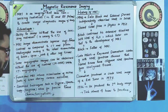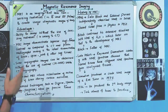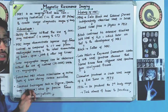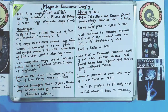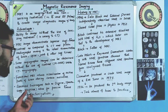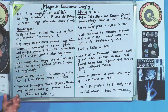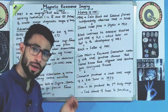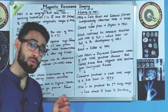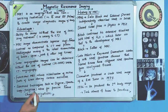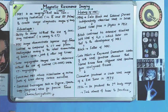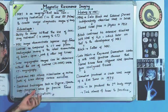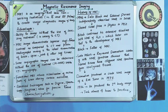Advanced techniques such as diffusion MRI, MR spectroscopy, and MR perfusion allow for precise tissue characterization. These advanced MRI techniques enable precise tissue characterization. I hope you have understood all the advantages of magnetic resonance imaging.